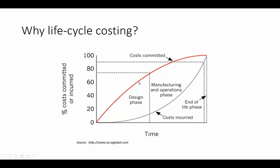However, the red line shows costs that have been committed. The key point is that by the time we've finished designing the product, a huge proportion of costs have been committed. Because once the product has been designed, we are committed to buying certain components and committed to a certain method of production. There is actually not much room for manoeuvre in terms of saving costs if we only start controlling costs during the manufacturing and operations phases.